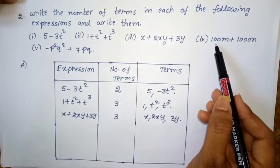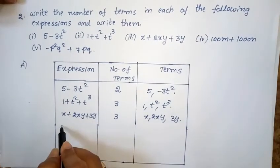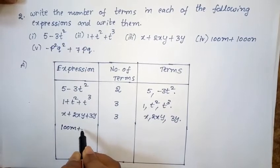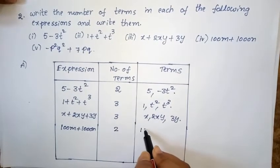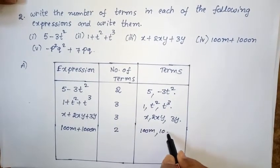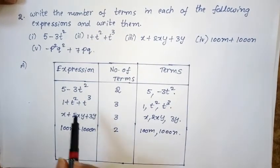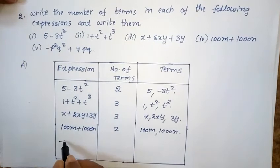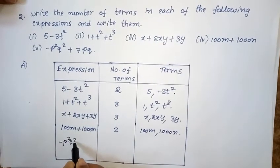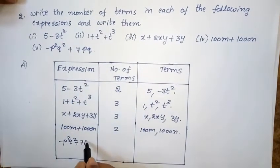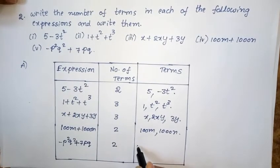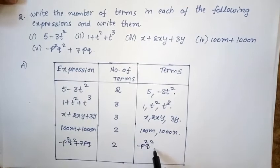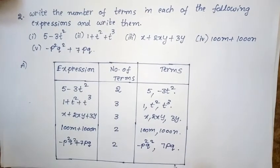Fourth expression: 100m plus 1000n. The terms are 100m and 1000n. Fifth expression: 1 minus p²q² plus 7p³. Total terms are 3. The first term is 1, second term is minus p²q², and third term is 7p³. This is the solution for the second problem.